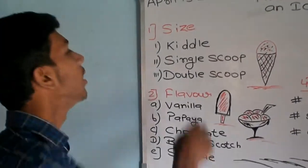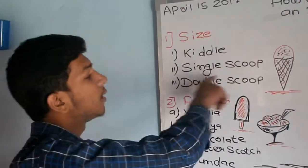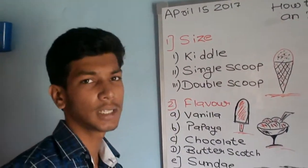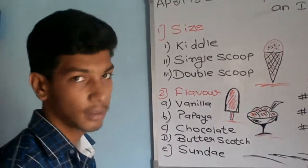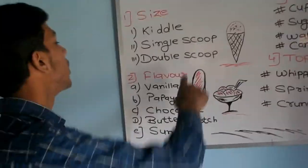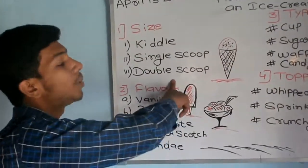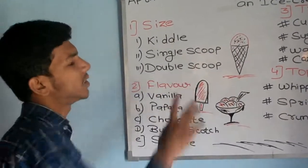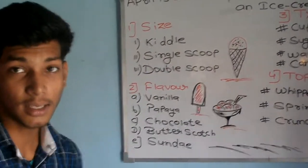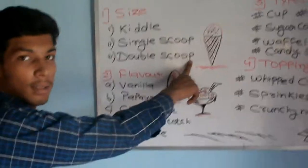If you are diet conscious and you don't eat a lot of ice cream, you can use a single scoop. You can use a double scoop when you are not diet conscious and you want more ice cream.